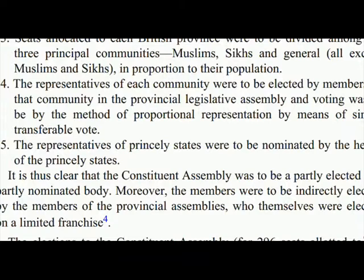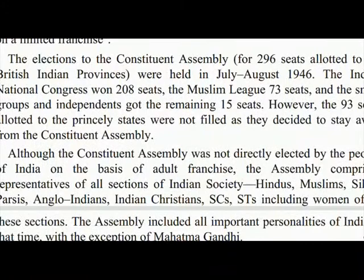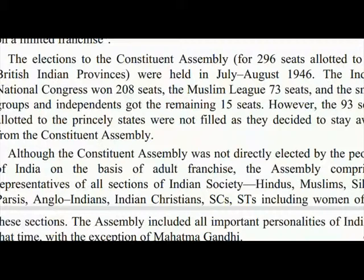The representatives of princely states were to be nominated by the heads of the princely states. Thus the Constituent Assembly was to be a partly elected and partly nominated body. The elections for 296 seats allotted to British Indian provinces were held in July–August 1946. The Indian National Congress won 208 seats, the Muslim League 73 seats, and small groups and independents got the remaining 15 seats.